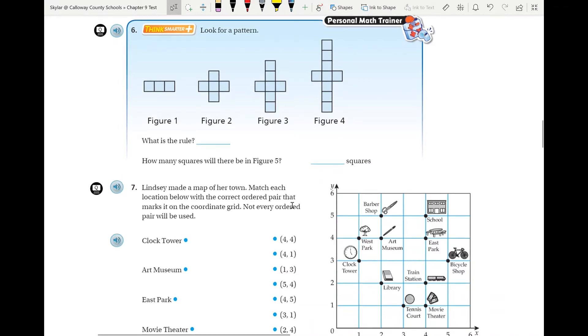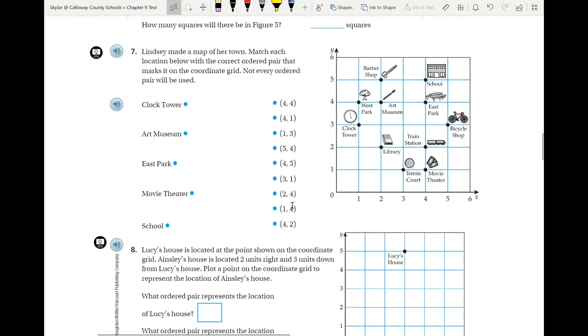Number seven, you are just looking for coordinates. Remember, it is going to be your X coordinate first and then your Y coordinate. So I'll even give you one. Let's do the clock tower. Here it is one over and one, two, three up. So that means it's going to be a one for the X and a three for the Y. So the clock tower is going to be at one, three.